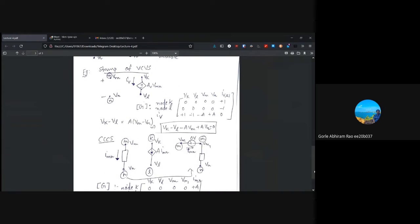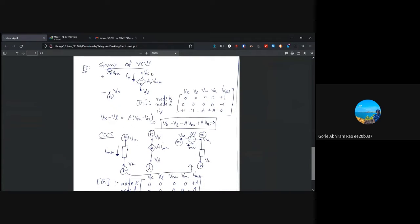Now, let's say we want to look at the stamp of a few elements. For example, if we want to look at the stamp of a voltage controlled voltage source. Let's say we have vm and vn as our potentials for points m and n.